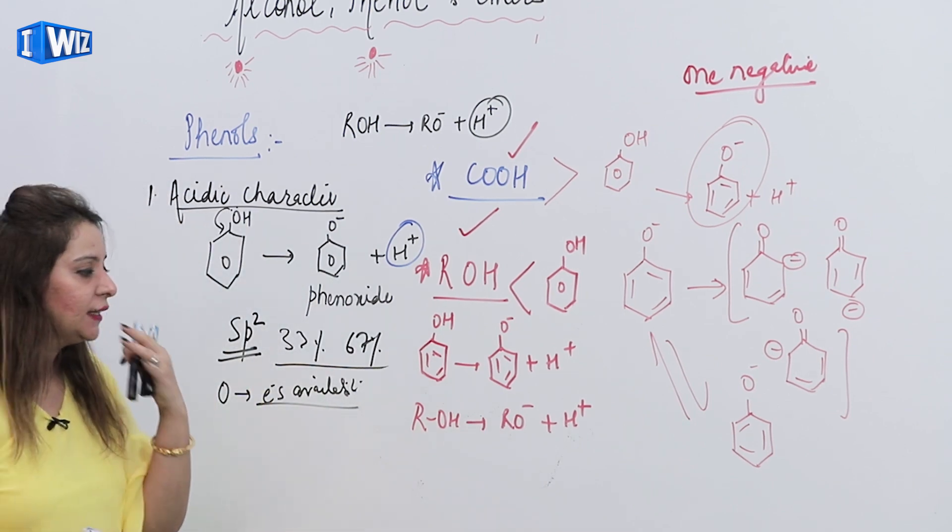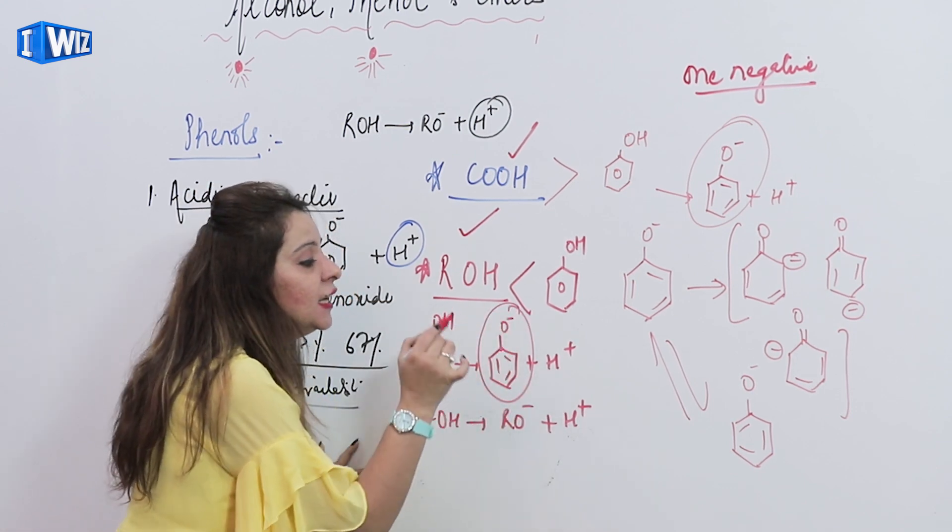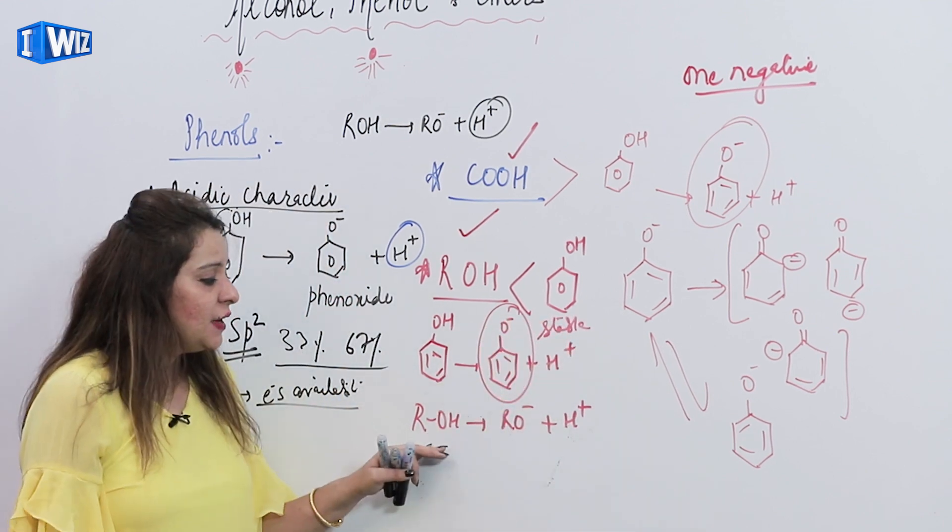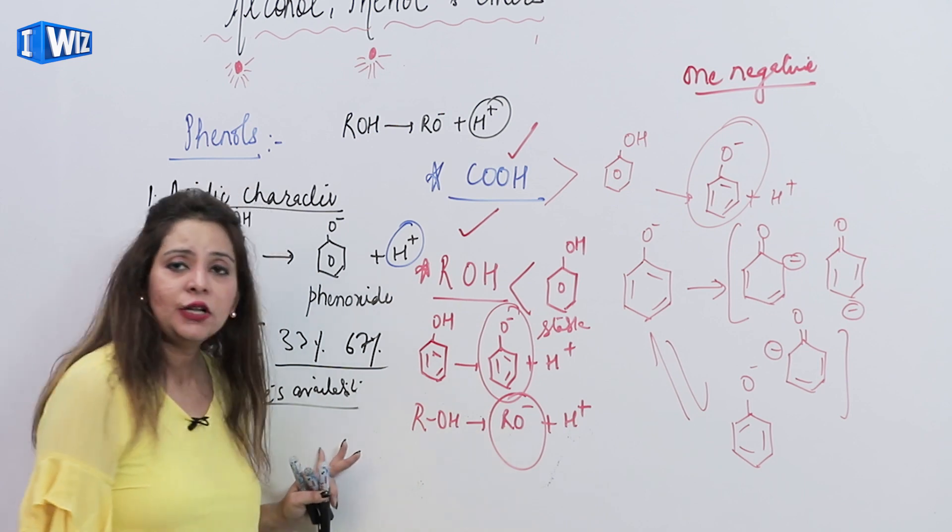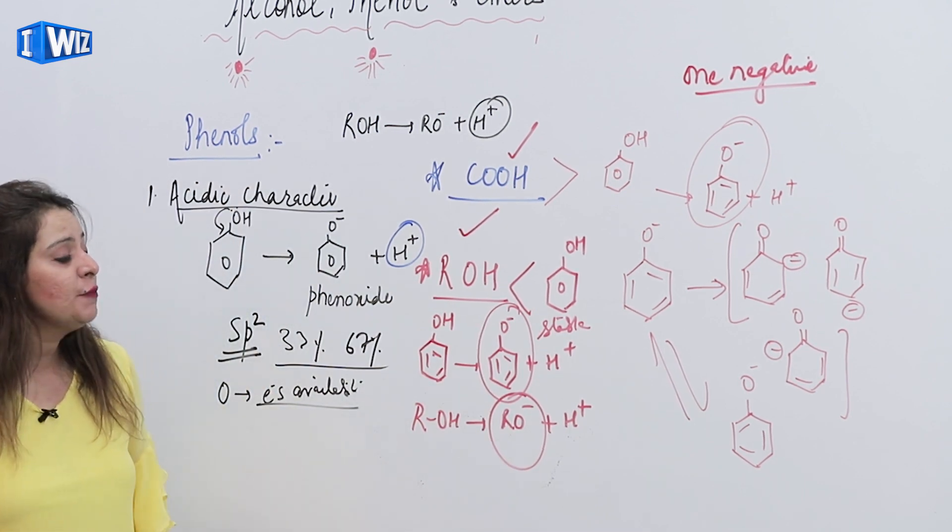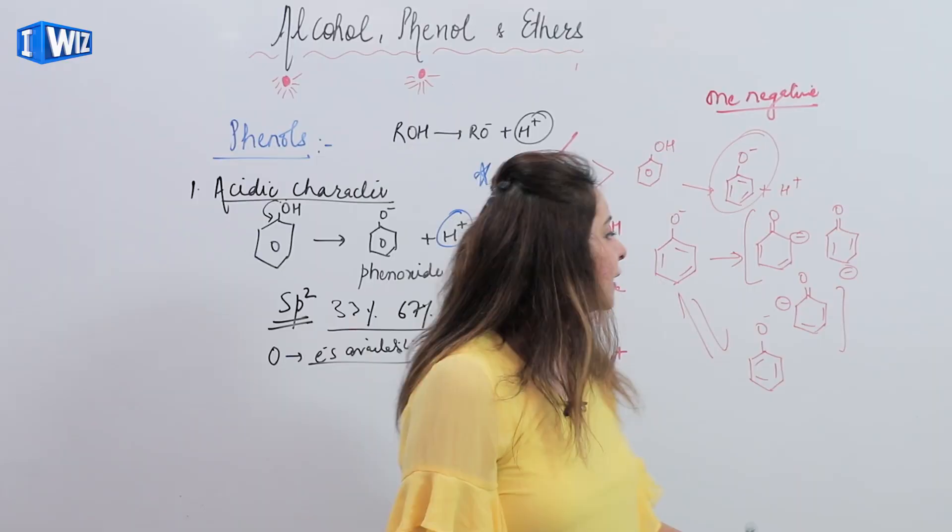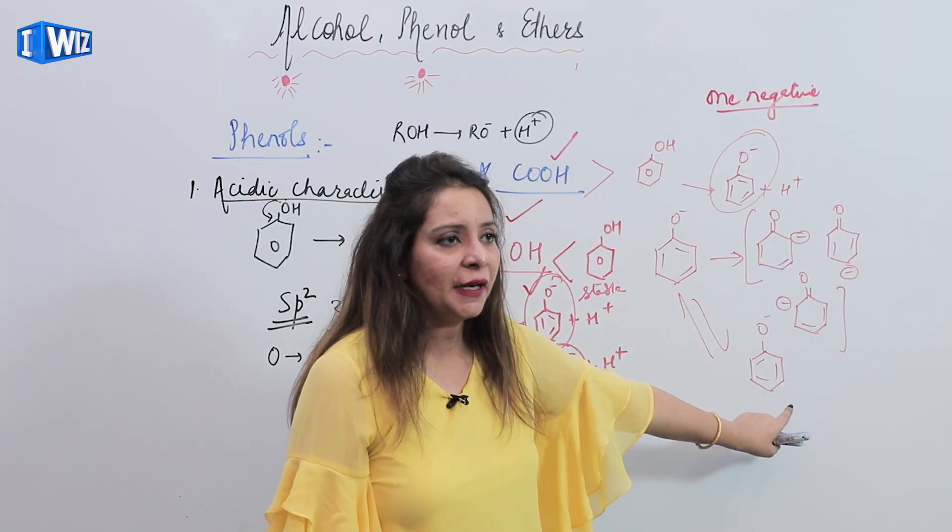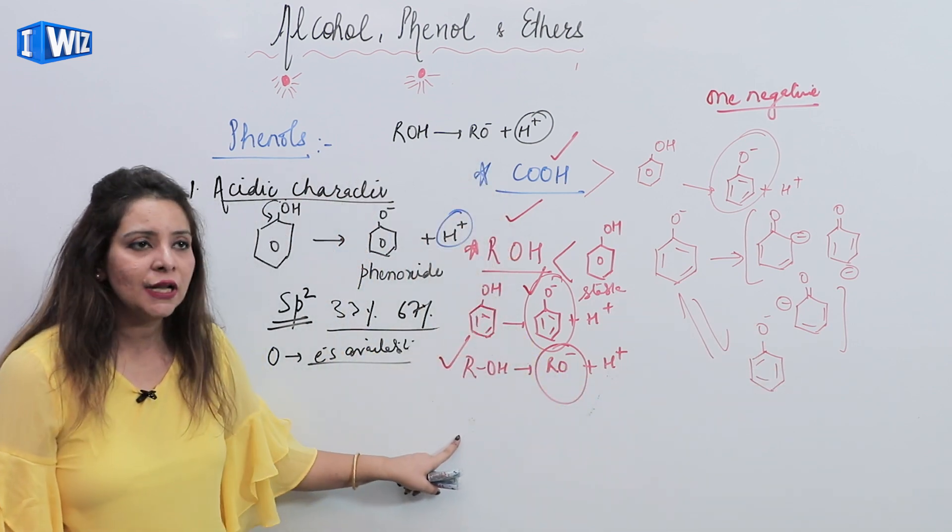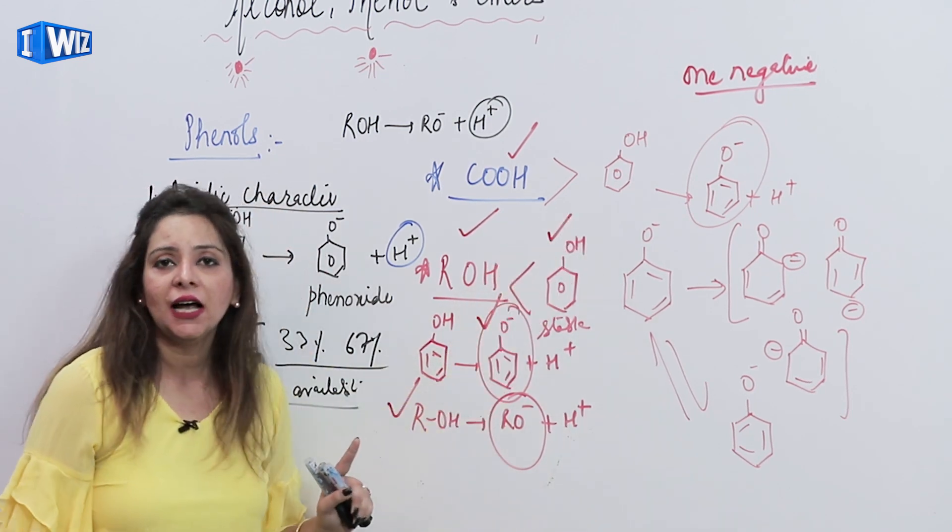Now if we talk about stabilization, if this ion being formed is more stable, it means its acidic character is more. Similarly, between ROH and RO negative, if RO negative is more stable, obviously its acidic character is more. We saw that phenoxide ion's stability can be explained on the basis of resonance, as we made resonating structures. This resonance stabilization which is possible here in phenol is not possible in alcohol.